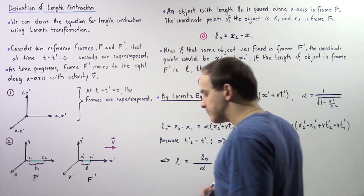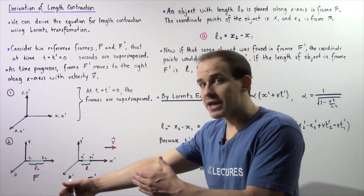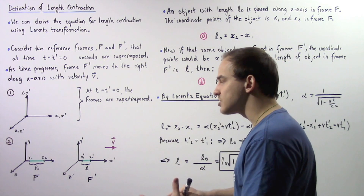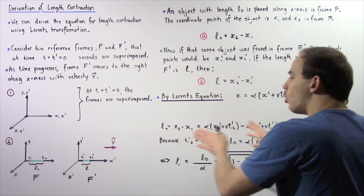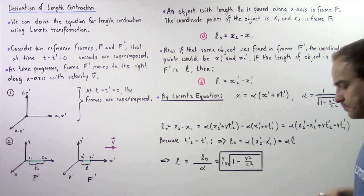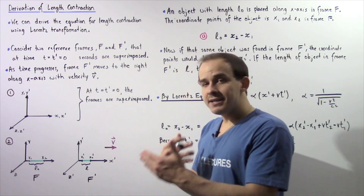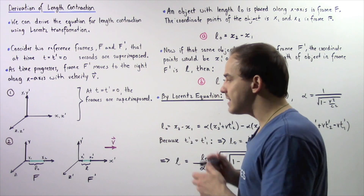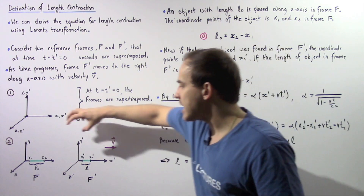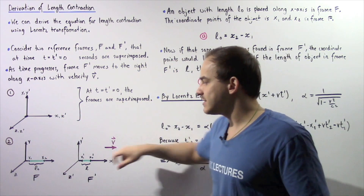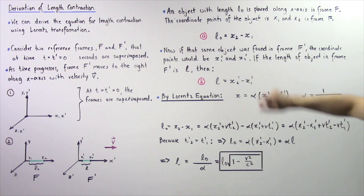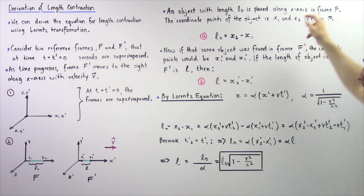As time progresses, reference frame f remains at rest while frame f' begins to move along the x-axis in the positive direction with velocity v. We take an object with a certain length and place it along the x-axis in frame f'. So an object with a length given by L0 is placed along the x-axis in frame f'.